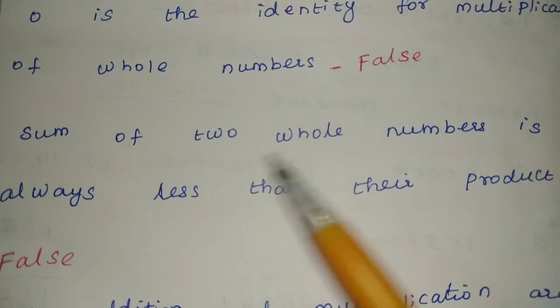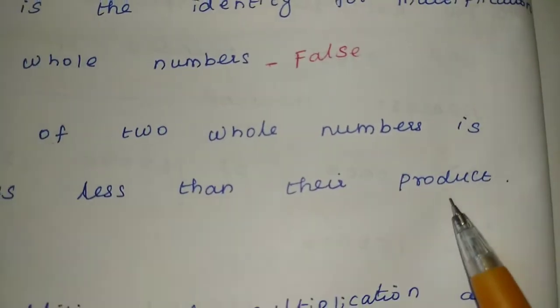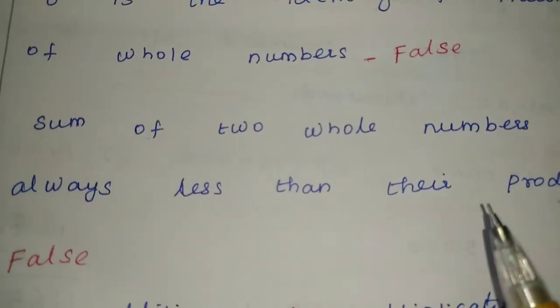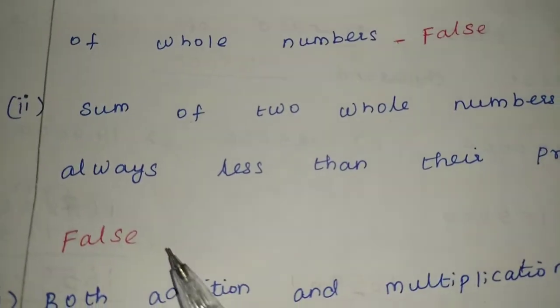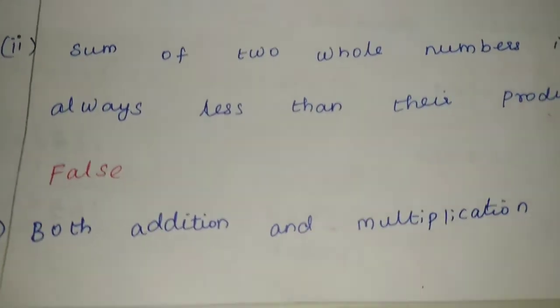Next, the sum of two whole numbers is always less than their product. The product of two whole numbers is not less than the product. The answer is false.